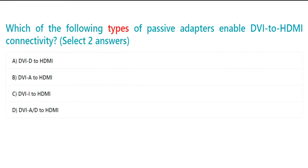Which of the following types of passive adapters enable DVI-to-HDMI connectivity? Select two answers. A. DVI-D-to-HDMI. B. DVI-A-to-HDMI. C. DVI-to-HDMI. D. DVI-A/D-to-HDMI.